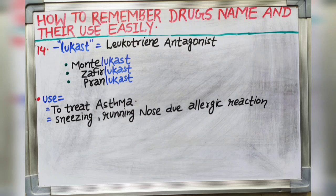Next suffix is -lukast, which indicates leukotriene antagonists. Drugs like montelukast, zafirlukast and pranlukast are used in the treatment of asthma, sneezing and runny nose due to allergic reactions.